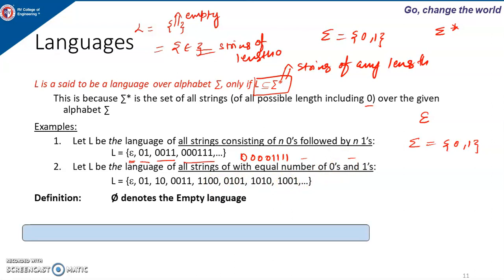Phi (the empty set symbol) is the empty language — it has only opening and closing curly braces with nothing inside. Phi is different from epsilon. If L equals {epsilon}, that is not the same as L equals phi. Phi means even a string of length 0 will not come, but epsilon means it has a string of length 0. So alphabet, string, and language — alphabet is the set of symbols used to frame words and statements; string is a finite sequence of those symbols; and language is a subset of sigma star. Thank you for watching.